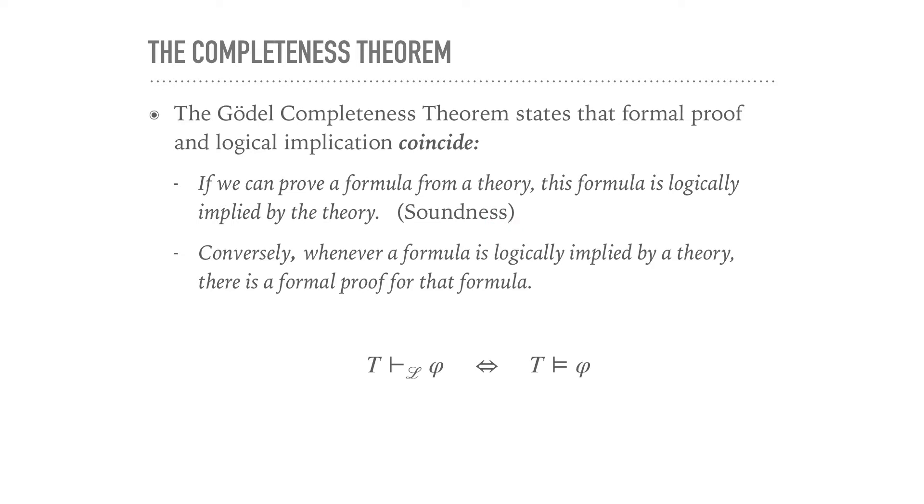Now conversely, whenever a formula is logically implied by a theory, there is a formal proof for that formula. So in short, T proves φ if and only if T logically implies φ. One direction is soundness and we've already proved that. The harder direction is going from here to here, and that's what we embark on now.